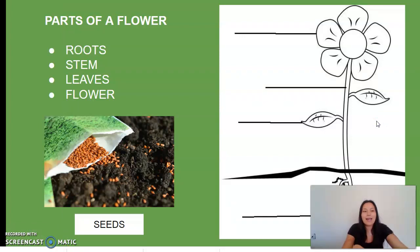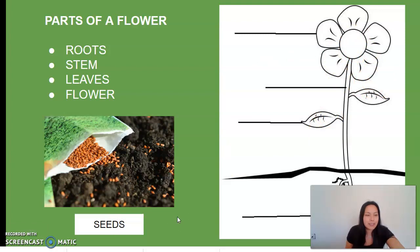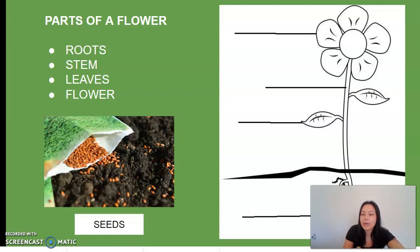Now we are going to be talking about the different parts of a flower. The different parts are: the roots, right here; the stem; the leaves; and the flower. I also included seeds because that's going to be a vocabulary term we'll go over. The roots support the plant and absorb water and nutrients from the soil. The stem supports the leaves and helps conduct water and minerals to the leaves.